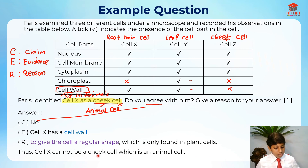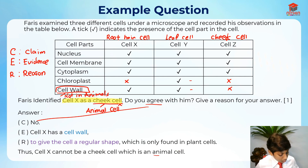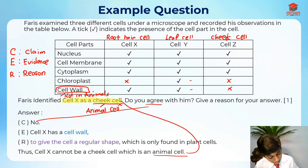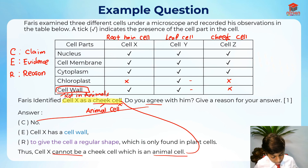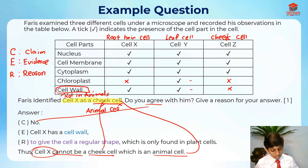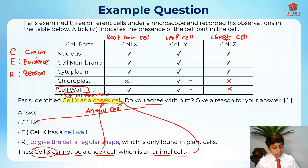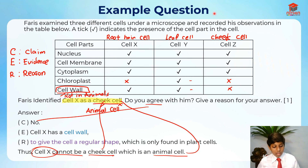Thus, cell X cannot be a cheek cell, which is an animal cell. I'm linking back to the question — cheek cell, cell X — linking back everything they told us. This is how you solve the question and apply the answering technique using the cell template structure.